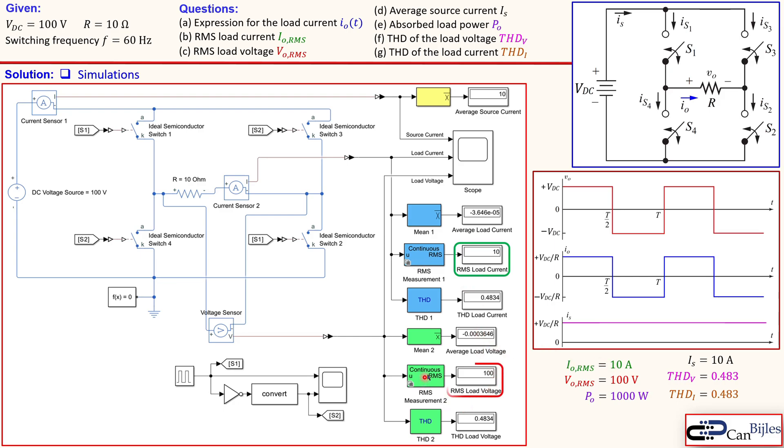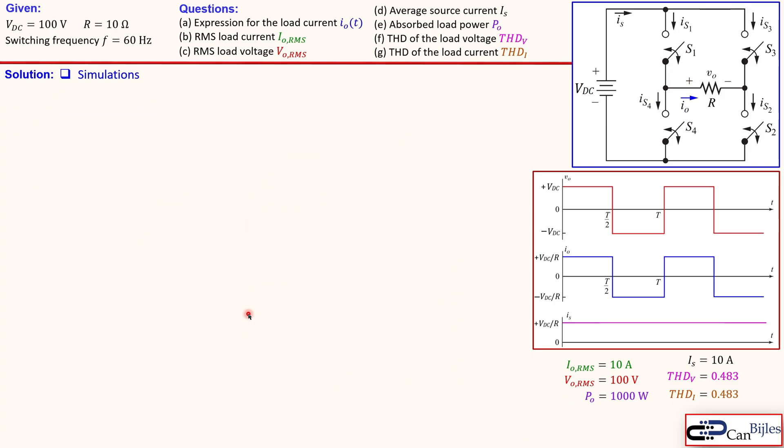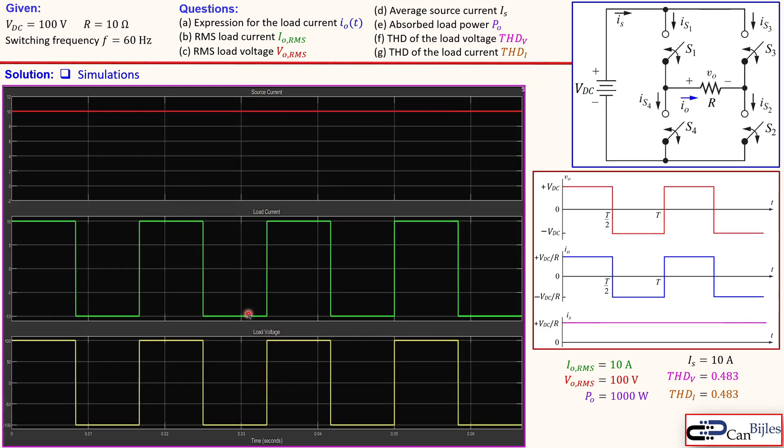You also see the RMS load voltage 100 volts so also as we have calculated we see the average source current is 10 amps also we have calculated we see the THD for the load voltage is 0.4834 so very close to what we have calculated maybe just due to round off errors and the same is for the THD for the load current so this is all nice and checked. Now let's also look at the waveforms.